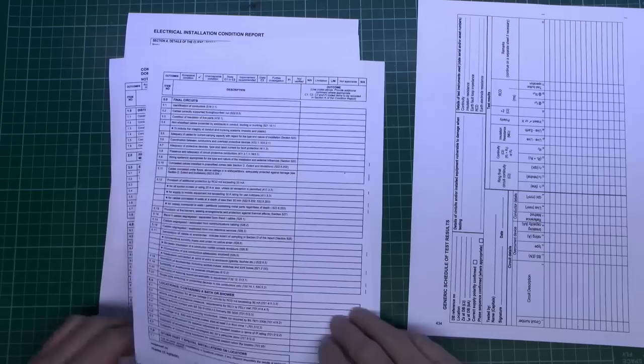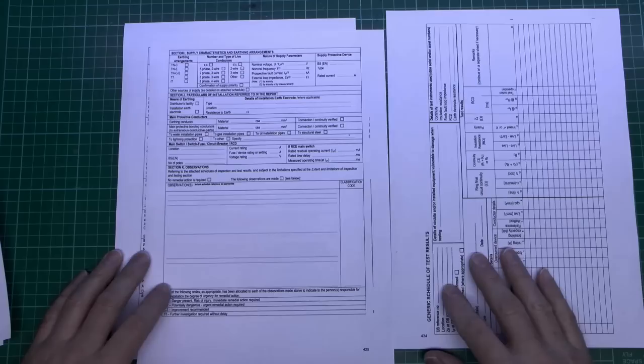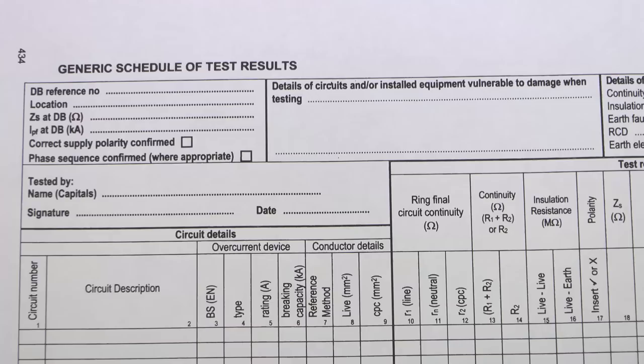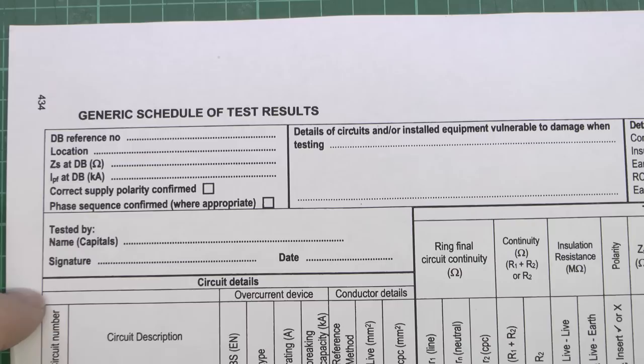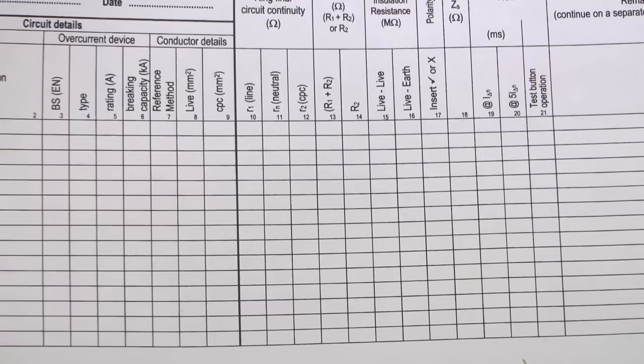A lot of this is similar to the installation certificate, but the main difference is you've got a whole load of stuff to be inspected, and of course you're not actually reporting on something you've just installed - you're reporting on what's there, most likely done by somebody else, possibly a very long time ago. The actual test results is exactly the same as used with the electrical installation certificate, so we're not going to cover that in this video. Have a look in the other video for filling that in, because it is literally the exact same item.